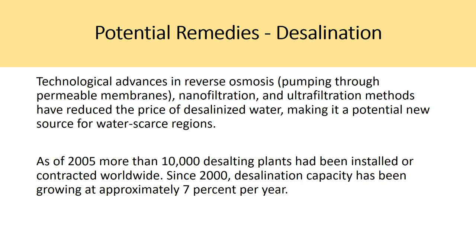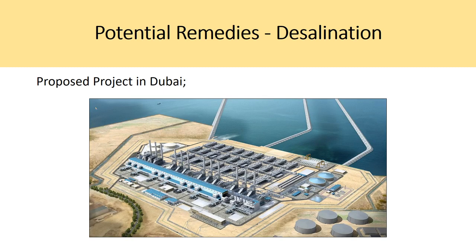The final remedy is desalination. Technological advances in reverse osmosis — pumping through permeable membranes — and nanofiltration and ultrafiltration methods have reduced the price of desalinized water, making it a potential new source for water-scarce regions. As of 2005, more than 10,000 desalinating plants have been installed or contracted worldwide, and since 2000 desalination capacity has been growing at approximately 7% per year. Especially in the Middle East, where access to fresh water is a significant problem, desalination is a potential remedy for future generations. Israel is one of the top countries in desalinated water use — approximately 30% of the water available to that country comes from desalination.